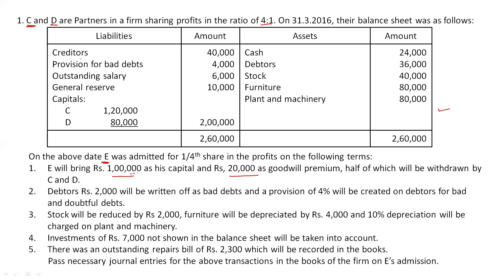Before starting with the journal entries, as I mentioned, we check for undistributed profits or losses. In this question, we have a general reserve of rupees 10,000. Before the admission of the partner, this has to be distributed among the existing partners. Other items that could appear include profit and loss account, advertisement expenses, employees compensation fund, or goodwill on the asset side — all are undistributed profits or losses. Partners are going to receive this amount; their capital is increasing.